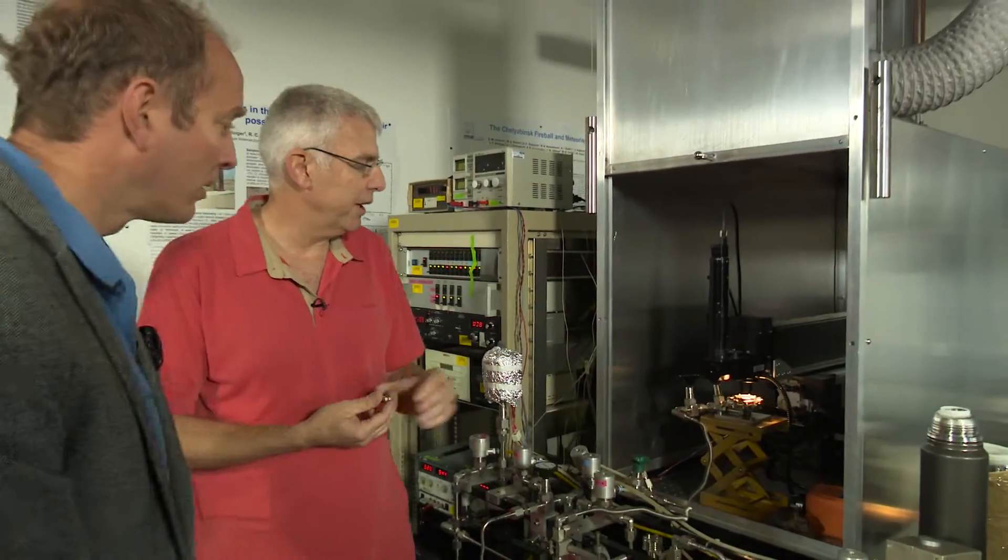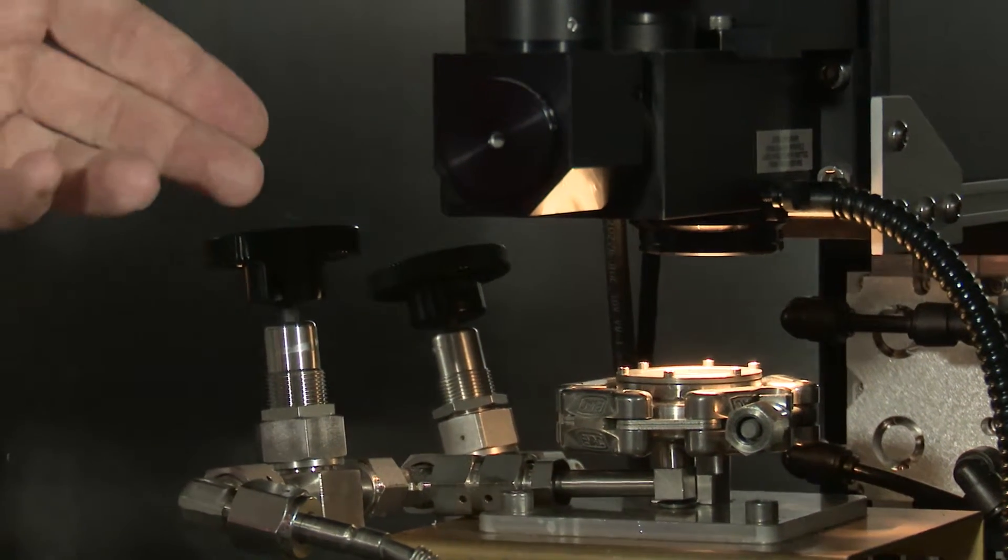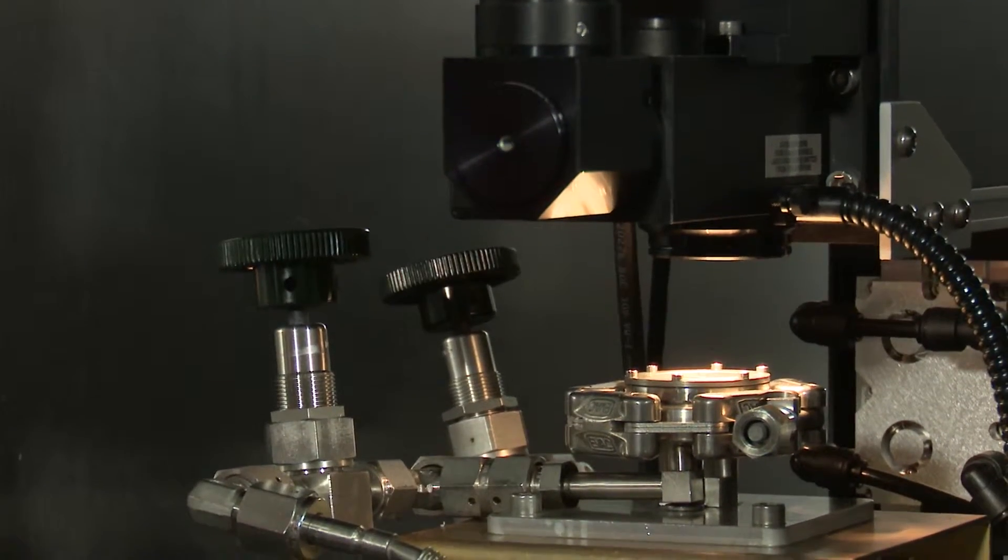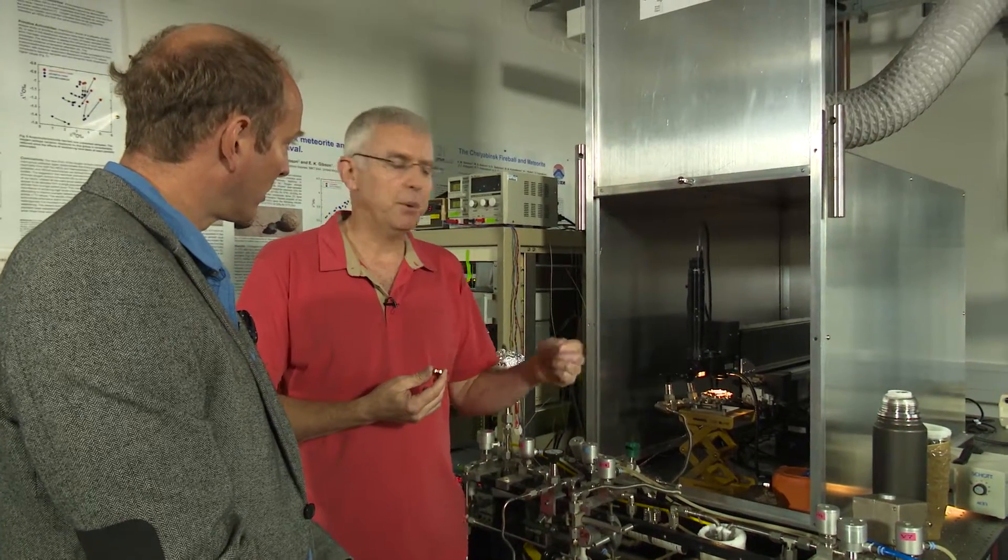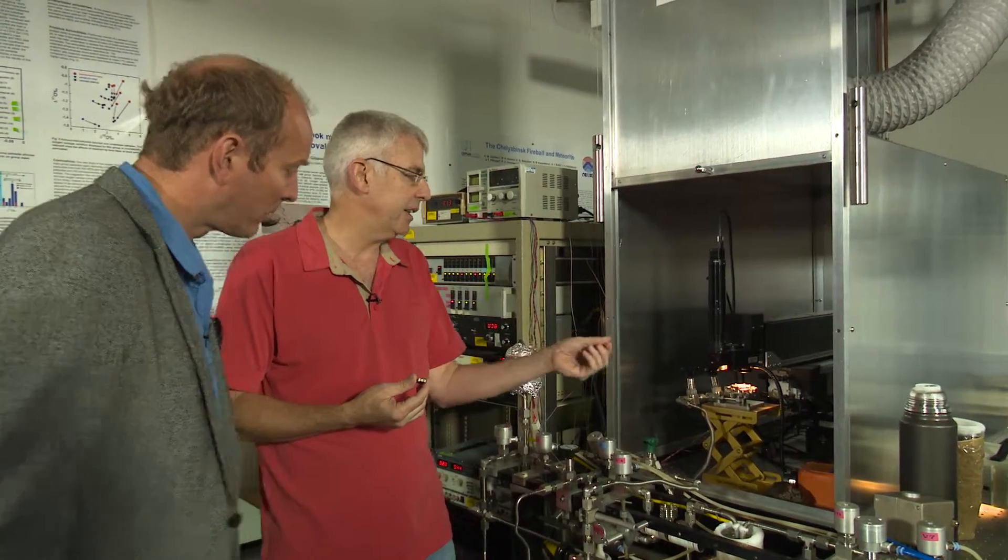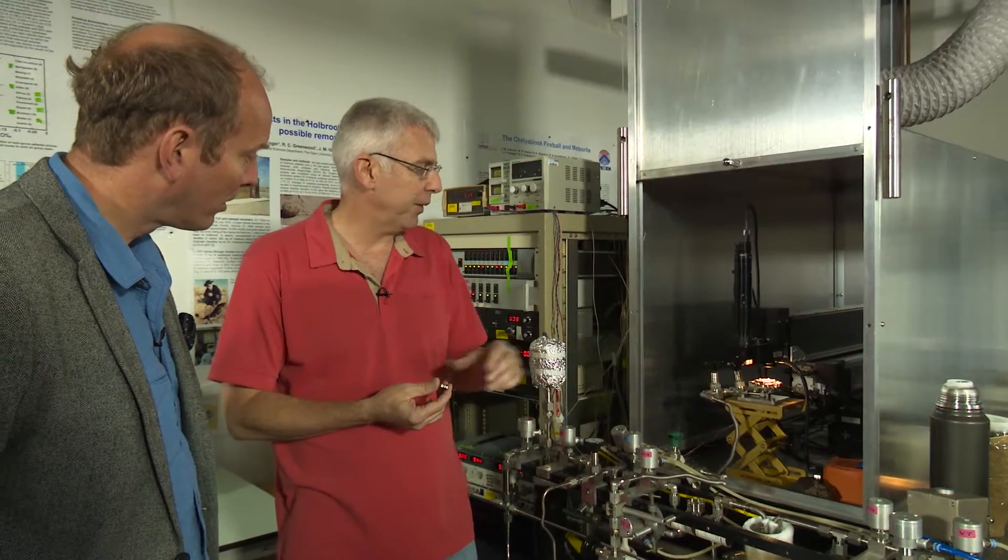The samples are then loaded into the sample reaction chamber which sits under the laser here. This is a CO2 laser that can drop down up to 50 watts onto the actual sample itself to heat it up. But that doesn't get the oxygen out of the sample. We have to react the sample with bromine pentafluoride, a very powerful oxidizing agent. That liberates all the oxygen out of the sample at the high temperatures we can achieve with the laser.